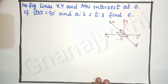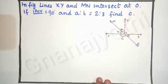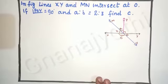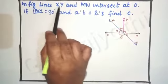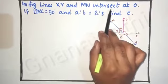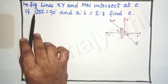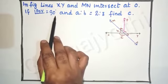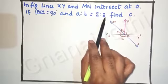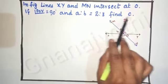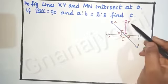Hello dear students, welcome to Jnana Jyothi YouTube channel. Let us look into the question: in the figure, lines XY and MN intersect at O. If angle POY is equal to 90 degrees and a is to b is equal to 2 is to 3, find c. Let us observe the figure.